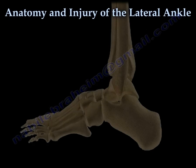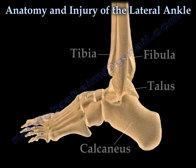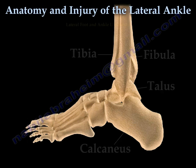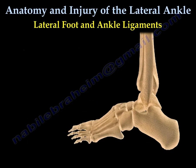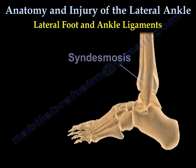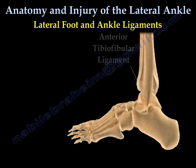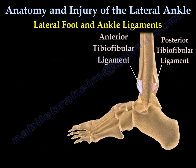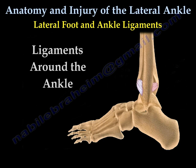Anatomy of the lateral ankle: bony structures of the ankle consist of the tibia, fibula, the talus, and the calcaneus. Ligaments of the ankle include the syndesmosis, the anterior tibiofibular ligament, and the posterior tibiofibular ligament.